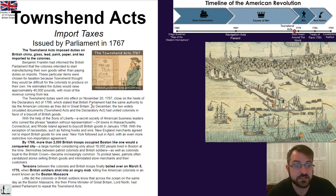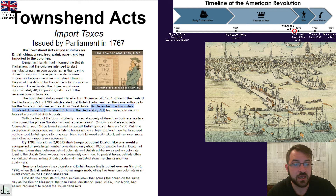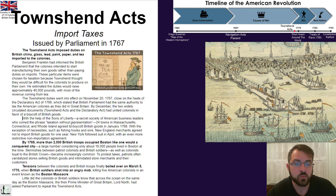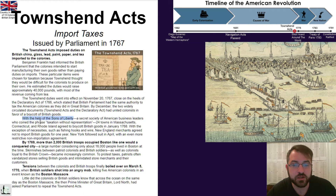By December, the two widely circulated documents — the Townshend Acts and the Declaratory Acts — had united colonists in favor of a boycott of British goods. With the help of the Sons of Liberty, which was a secret society of American business leaders who coined the phrase 'no taxation without representation.'